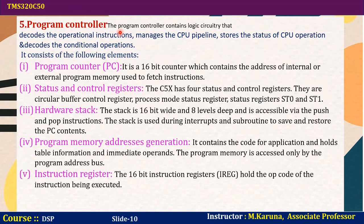The program controller contains logic circuitry that decodes operational instructions, manages the CPU pipeline, stores the status of CPU operation, and decodes conditional operations. It consists of a program counter which stores the address of the next instruction. The C5x has four status and control registers: circular buffer control register, process mode status register, and status registers ST0 and ST1.